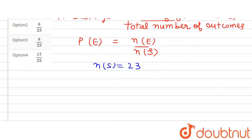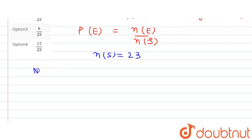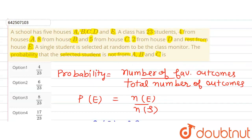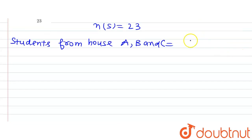The number of students from houses A, B, and C: there are four students from house A, eight from house B, and five from house C. Adding them — four plus eight plus five — that means there are 17 students from houses A, B, and C.